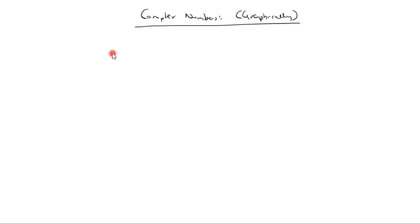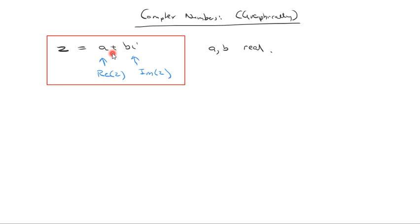We've talked about complex numbers being some number z equal to a plus bi, where a is the real part of z and b is the imaginary part of z, and a and b are both real. We've talked about how we would add, subtract, multiply, and divide complex numbers using the algebraic definition — collect like terms, expand, use conjugates. We also talked about using that to solve quadratic equations that had no real roots. That's the algebraic approach.